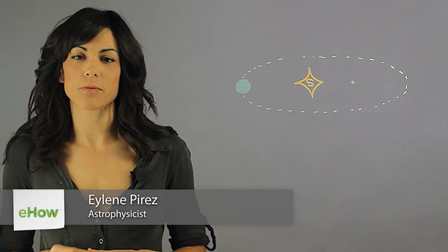Hi, my name is Aileen Perez and I'm an astrophysicist. This is the effect of a planet's mass on its orbit.